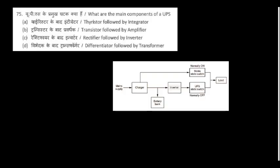What are the main components of a UPS? A UPS must have a battery and an inverter. To charge the battery we need a rectifier, and to convert DC back to AC we need an inverter. So the answer is: a rectifier and an inverter.